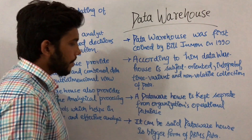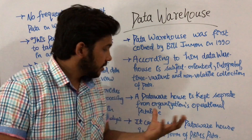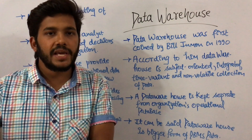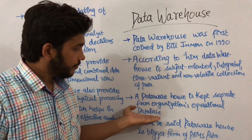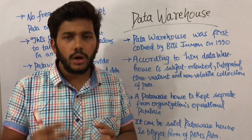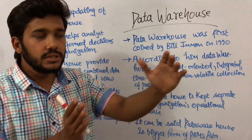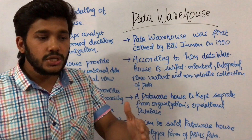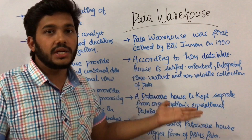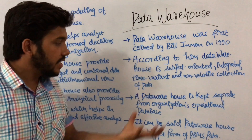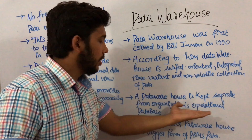A data warehouse is kept separate from the organizational operational database. I keep the operational database in one particular DBMS file, but I cannot keep the data warehouse data in the same operational database because data warehouse data is too large. The operational database data is small and changes frequently — after a week or daily — but data warehouse data does not change for a long period and is a huge amount. So data warehouse is kept separate from the organizational operational database.